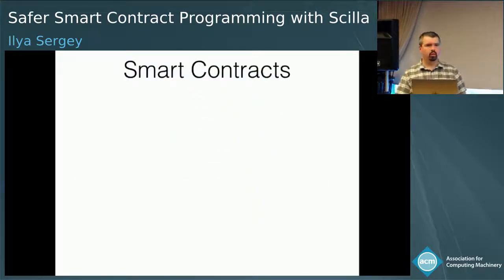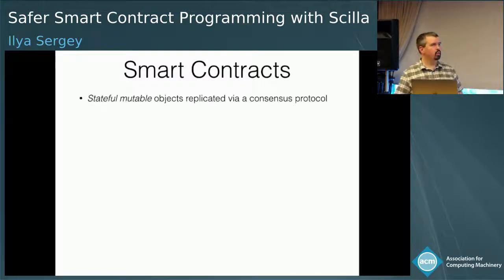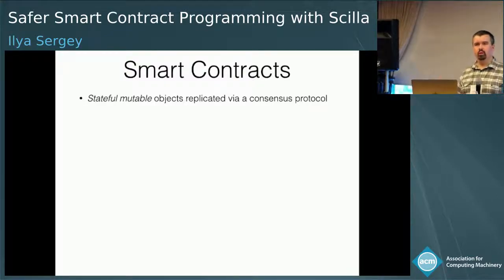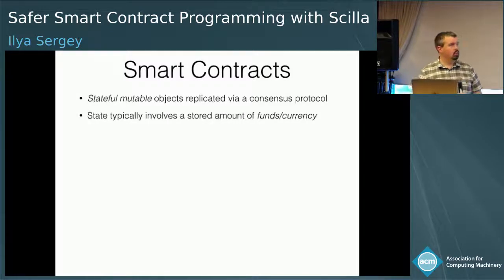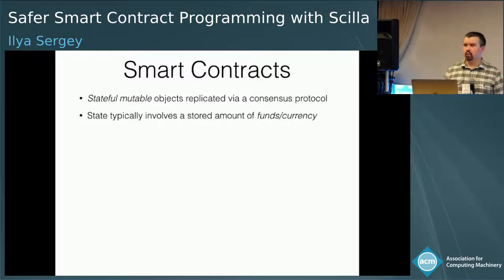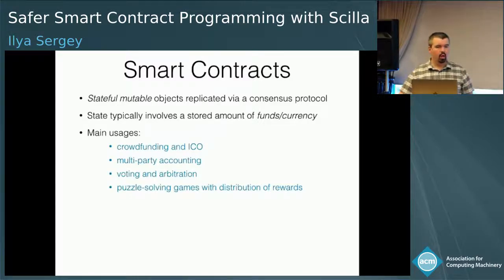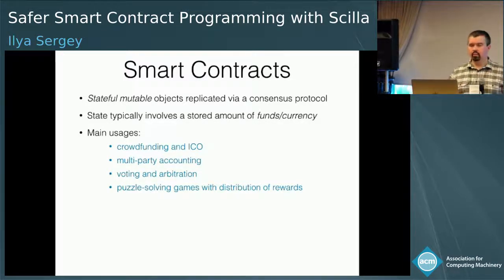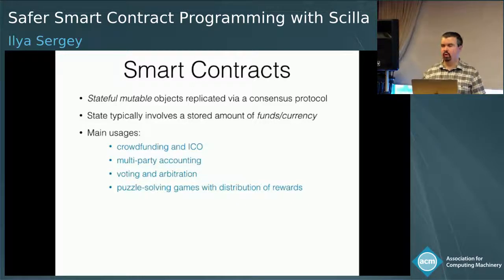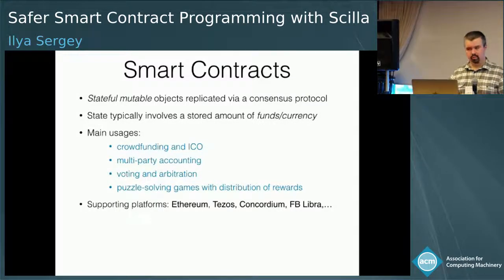Smart contracts have many appearances in the press nowadays. The easiest way to think of them is as stateful mutable objects that are replicated by a consensus protocol, where each party has their own copy of the state and they all need to agree on how these objects evolve over time. A typical component of the state involves currency that parties need to agree on. Interesting usages include running crowdfunding campaigns, doing voting, multi-party accounting, even implementing puzzle-solving games and distributing rewards. Many platforms targeting distributed consensus via blockchain have now provided support for smart contracts.